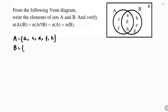In set B, we have the elements a, b, e, g, h. So set B is {a, b, e, g, h} — these are the six elements of set B.